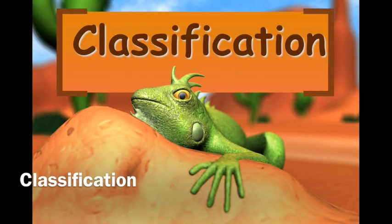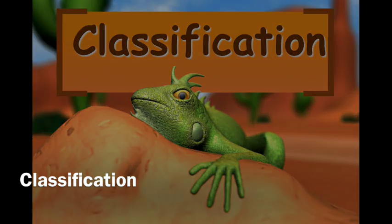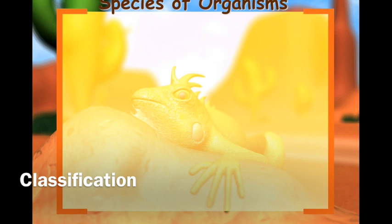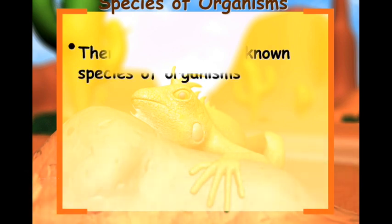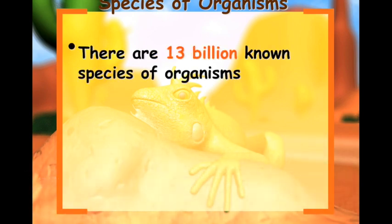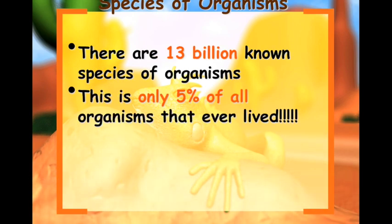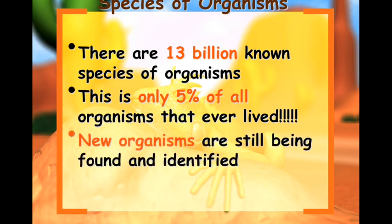Alright guys, we're going to go over classification today. There are 13 billion known species of organisms, and this is only 5% of all organisms that have ever lived. New organisms are still being found and identified.